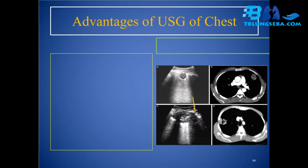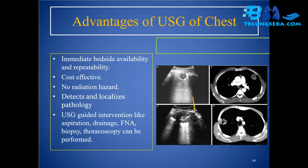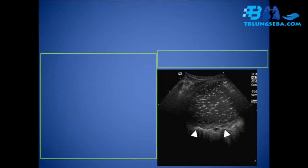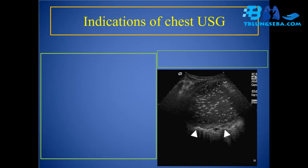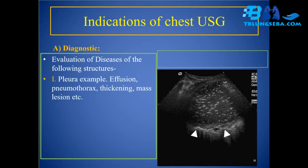Advantages of USG of the chest: immediate bedside availability and repeatability, cost-effective, no radiation hazard, detects and localizes pathology. USG-guided interventions such as aspiration, drainage, FNA biopsy, and thoracoscopy can be performed. It also allows localization of mass lesions for FNA, with the arrow indicating the needle.